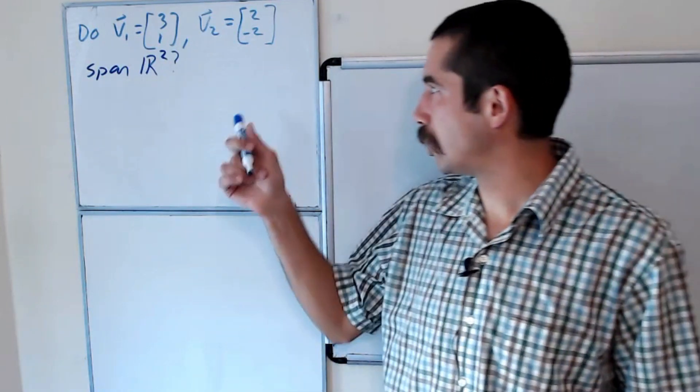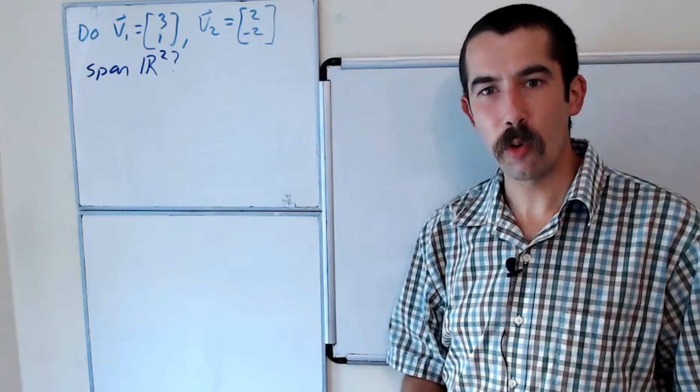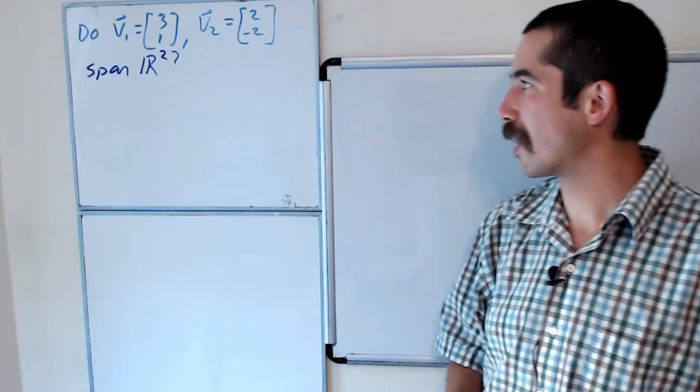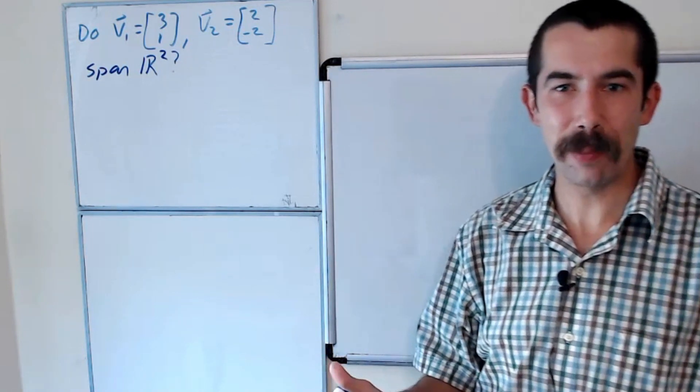Do the vectors v1, which is 3, 1, and v2, which is 2, negative 2, span R2? And how can we be certain?